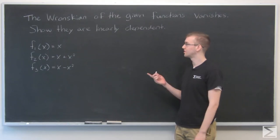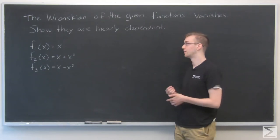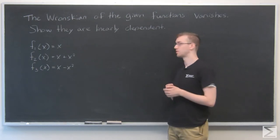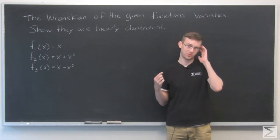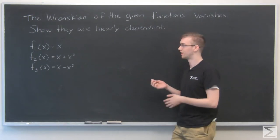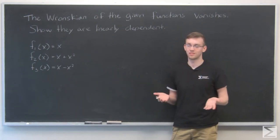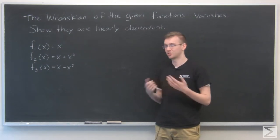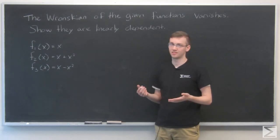For this problem, we are told that the Wronskian of the given functions vanishes, and we need to show that these three functions are linearly dependent. Because the Wronskian vanishes, we can't use it to verify what we need to do. We're saved the work of computing it—we're just told it vanishes. So how do we do this?